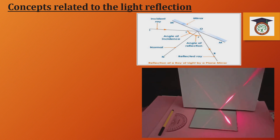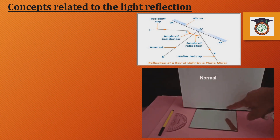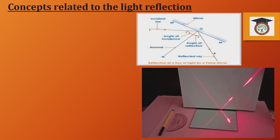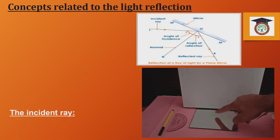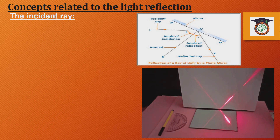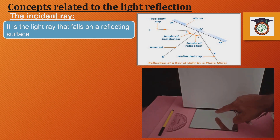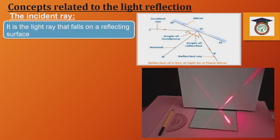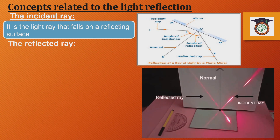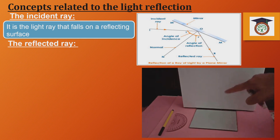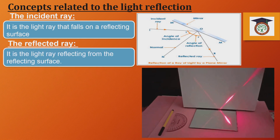If we draw a line perpendicular to the mirror from the point of incidence, we get two angles: the angle of incidence and the angle of reflection. The incident light ray is the light ray that falls on a reflecting surface. The reflected light ray is the light ray that is reflected from the reflecting surface. Both are represented by straight lines.